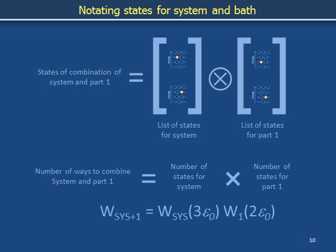The number of ways to find the world consisting of a system at energy 3 squiggly E0 and a so-called part 1 at energy 2 squiggly E0 is the number of ways to find the system at energy 3 squiggly E0 multiplied by the number of ways to find part 1 at energy 2 squiggly E0.